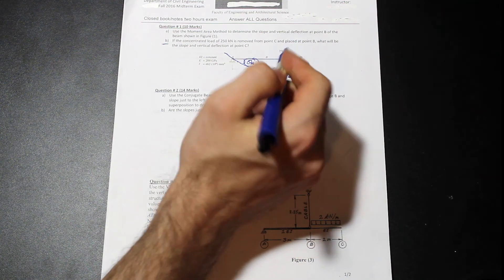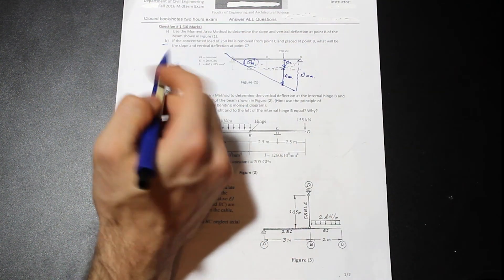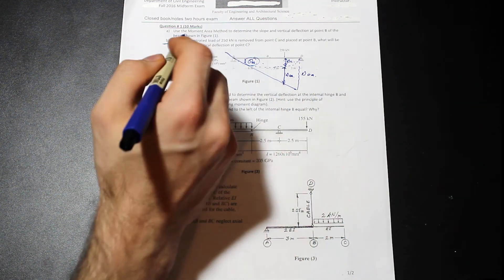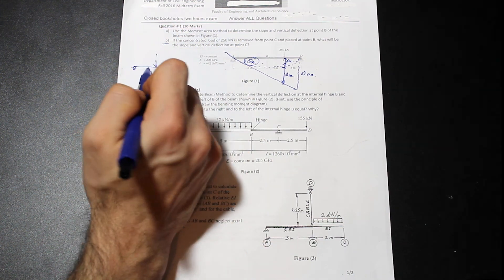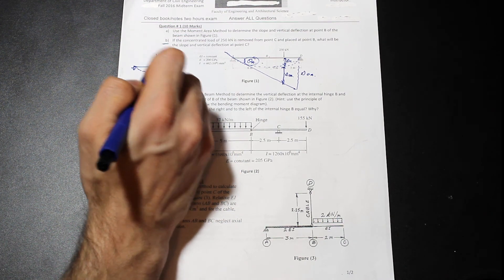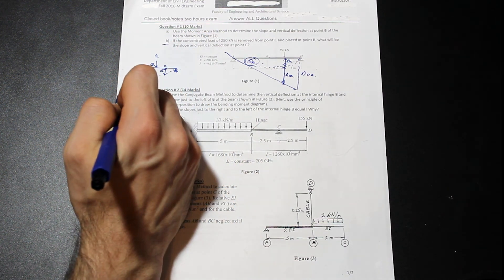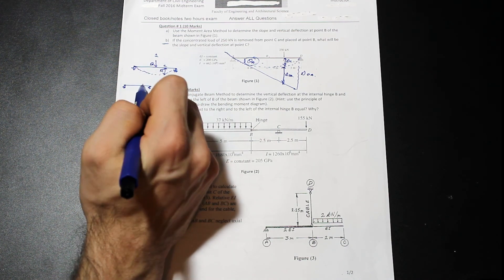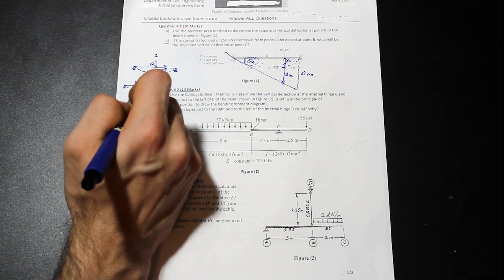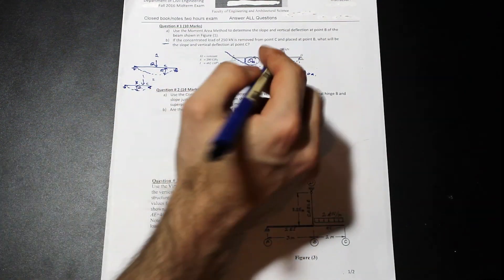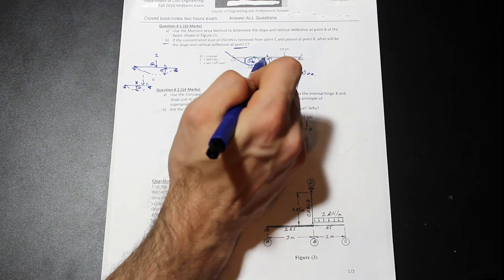So the second part of the question asks if the load is removed from point C and it's placed at point B, what are the slope and the deflection at point C? And that is actually Maxwell's law of reciprocal deflections, I believe it's called. So the idea behind that is if we have a linearly elastic beam, and we apply a unit load at some point, we'll call it B. The deflection at C due to this one unit load would be the same as if we had a unit load placed at C and it would be the same as the deflection at B. So these are equal to each other, these two deflections here. So that's kind of the idea. So for example, if you solved for the deflection at B and that's what we were looking for in this question, the deflection at C and B would be the same. If you put the point load at C or B, that's the idea.